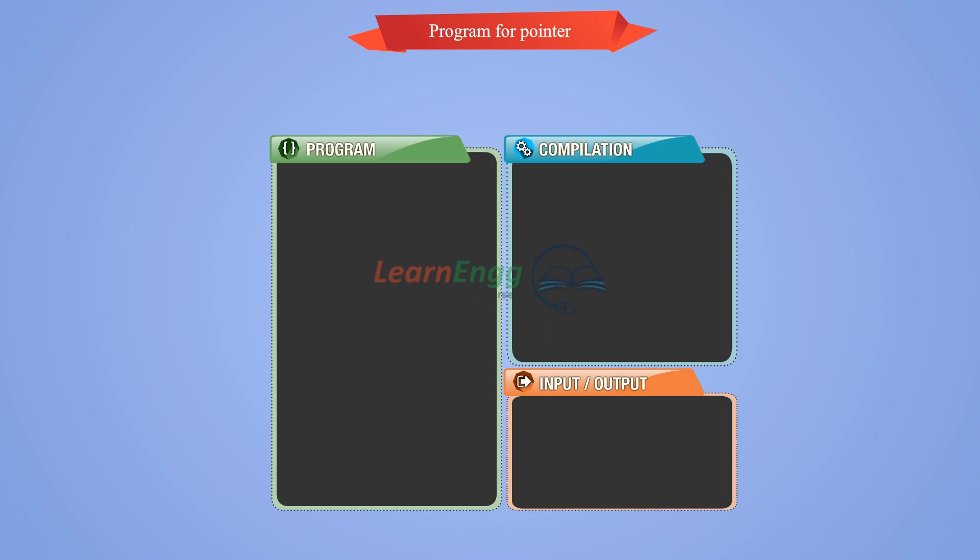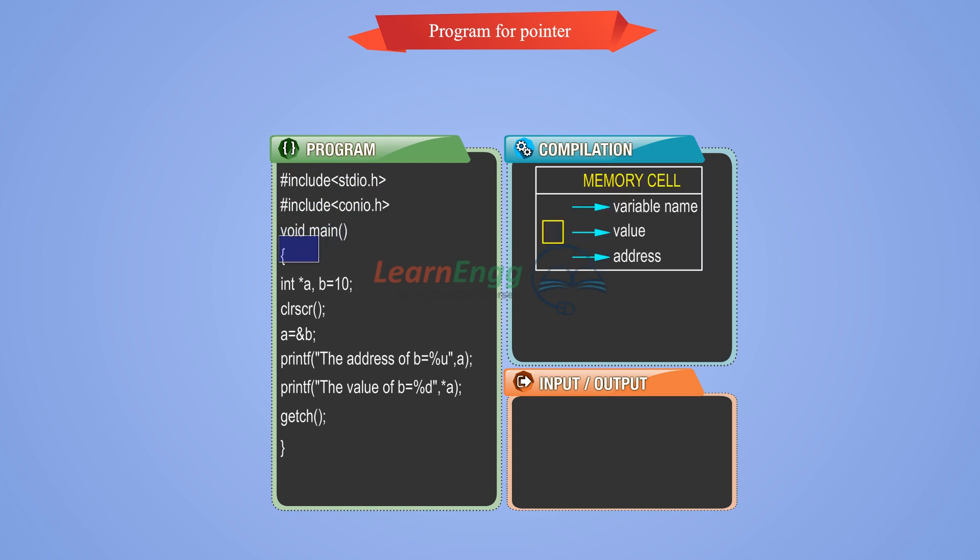Program for pointer: This example program demonstrates how to access the pointer variable. Pre-processor directive used to access standard C library function. From void main function, the program execution starts.